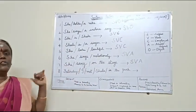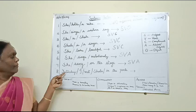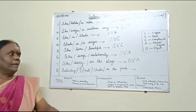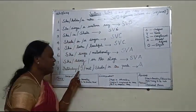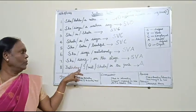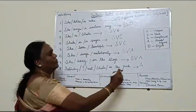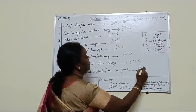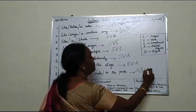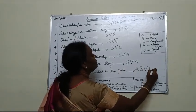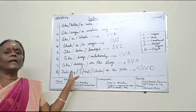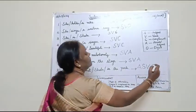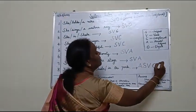Let us go to the eighth sentence. It starts with the word 'yesterday,' which tells you about the time — so it's an adverb. Now, 'I' is the subject and 'met' is the verb. Whom do I meet? I met Sheena — that is the object. Where? In the path — so that is an adjunct.